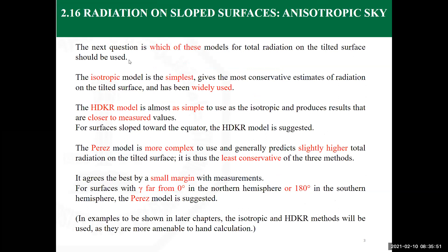Here is a summary of which model for total radiation should be used. The isotropic model is the simplest and most conservative estimate — the least accurate among the three — but it is widely used because of its simplicity. The HDKR model is relatively simple but gives results closer to true measured values. Finally, the Perez model is the most complex, has more components, and sometimes gives a slight overestimation, but it is the closest to actual values.